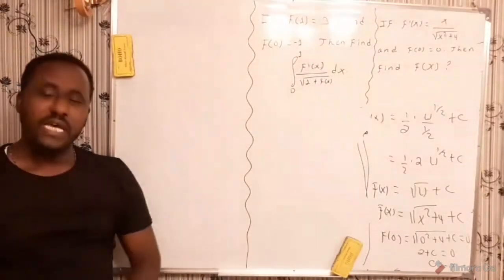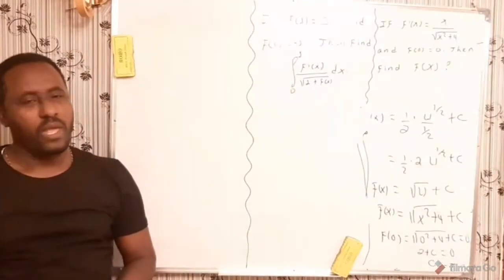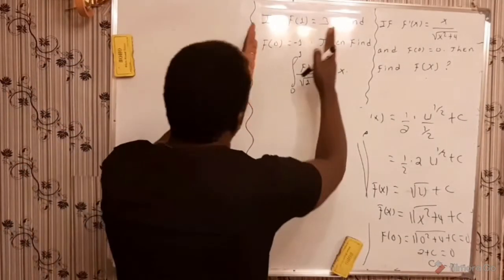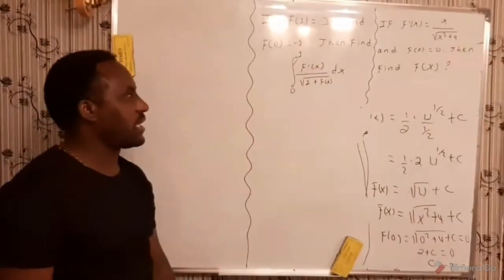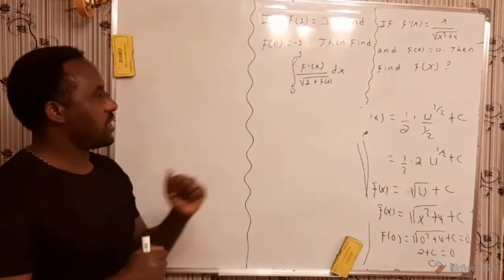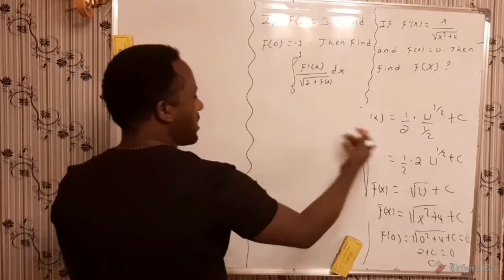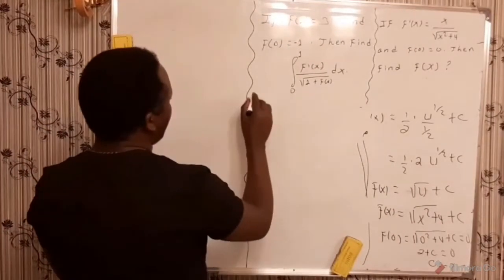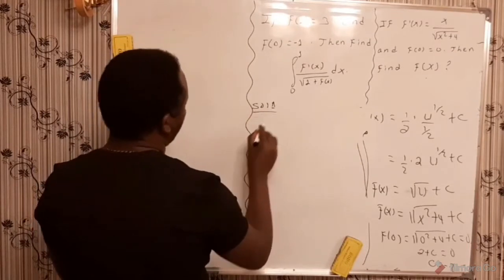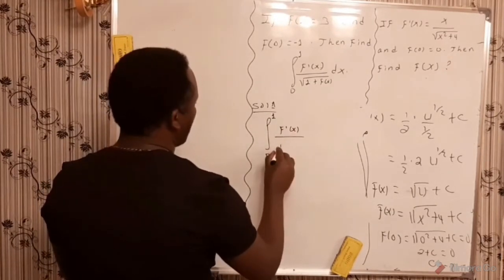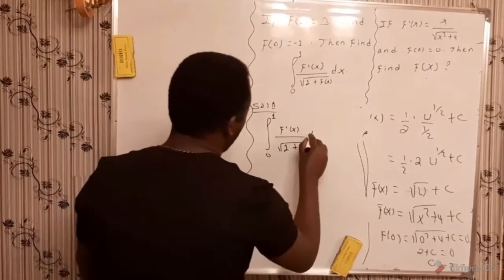Now let's go to the second example. On this second example, you have already been given f of 1 and f of 0 — that means two range values for a certain arbitrary function are given. The function is not obviously known. Based on this information, we need to find the integral of f prime of x over the square root of 1 plus f of x, with respect to x, from 0 to 1.